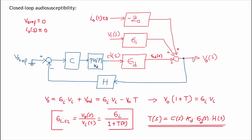We can then obtain the relationship for the output voltage. The output voltage at this point is the addition of VOD plus the input voltage times the audio susceptibility in open loop. The voltage calculated from the feedback path is the output voltage times H, times minus one, times the compensator transfer function, times the gain of the PWM circuitry, times the control-to-output transfer function. All these transfer functions multiplied correspond to what we call the loop gain T. From this we get the audio susceptibility in closed loop, where T corresponds to the loop gain.